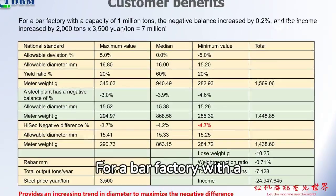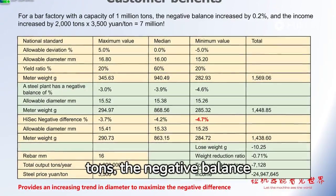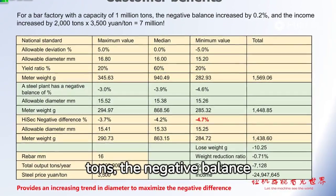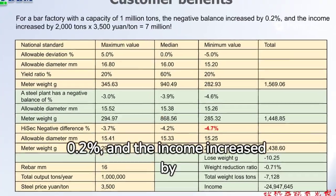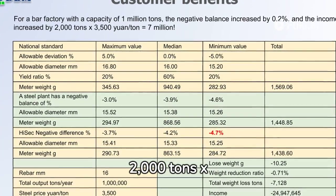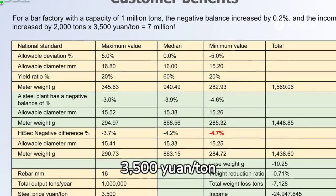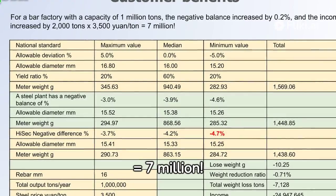For a bar factory with a capacity of 1 million tons, the negative balance increased by 0.2%, and the income increased by 2,000 tons × 3,500 yuan per ton, equaling 7 million yuan.